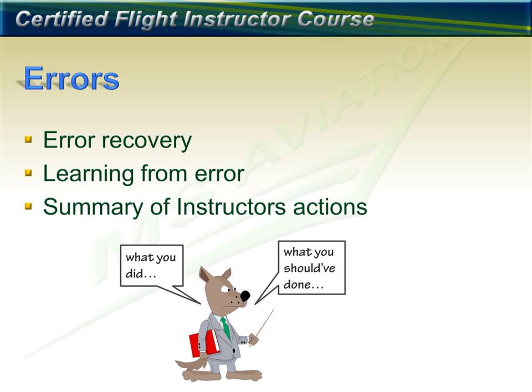The instructor must teach the student how to recover from errors by giving the student practice recovering from commonly made errors. The student should also be learning from the errors they make. Instructors should: explain that errors occur at all skill levels, explain that errors decrease with practice and experience, explain the difference between slips and mistakes, explain how students can minimize errors, allow practice recovering from errors, point out errors when they occur, and ask the student to explain why they occurred.